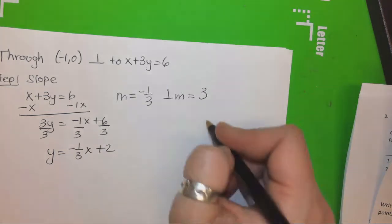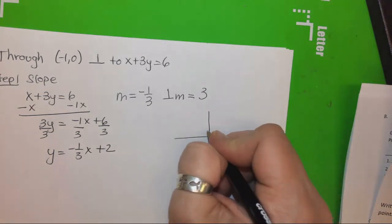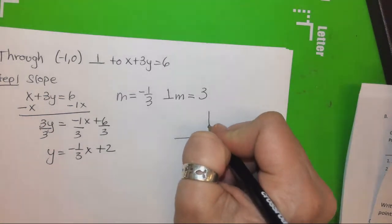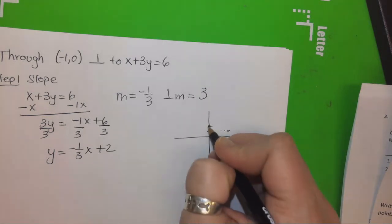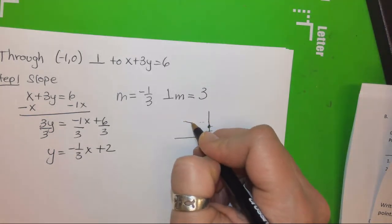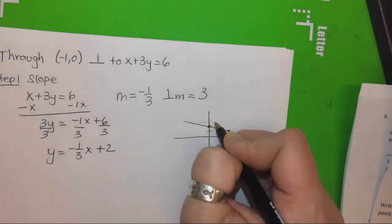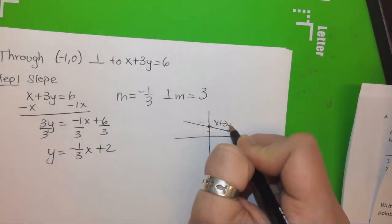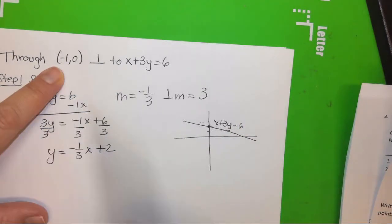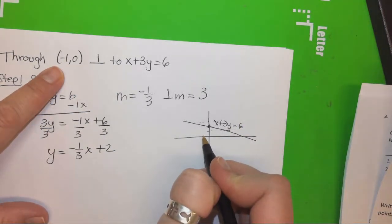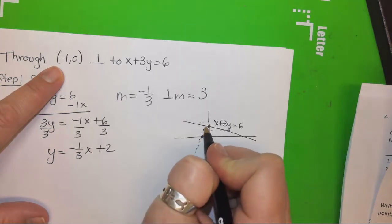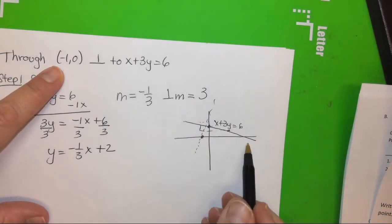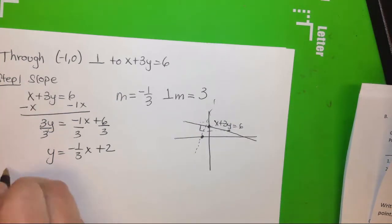So, really, what we are doing here is we have some equation. Y intercept is 2. We go down 1. We go right 1, 2, 3. Or up 1. So, your original line looks something like this. x plus 3y equals 6. We want to find a line that goes through negative 1, 0. And when it does that, it forms a perpendicular, it is perpendicular to the original. So, that's what you're after. You want this equation. We know the slope.